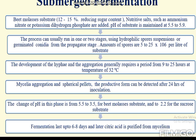The change of pH in this phase is from 5.5 to 3.5 for beet molasses substrate and 2.2 for the sucrose substrate. In this method, fermentation takes around 6 to 8 days, after which citric acid is purified from the mycelium.